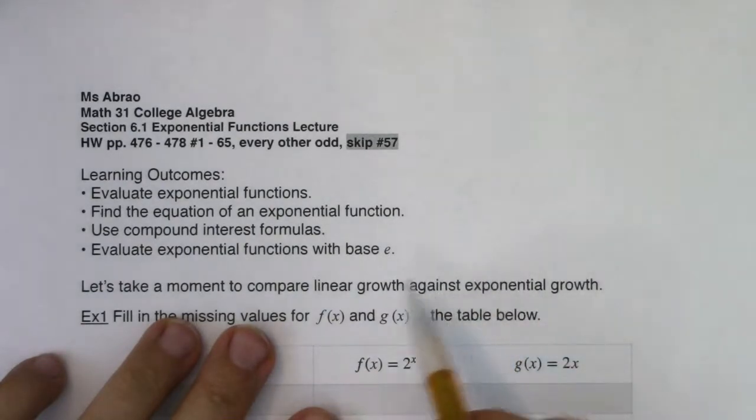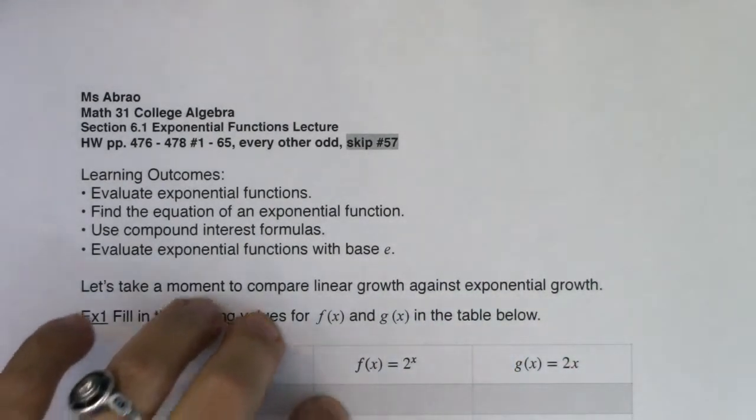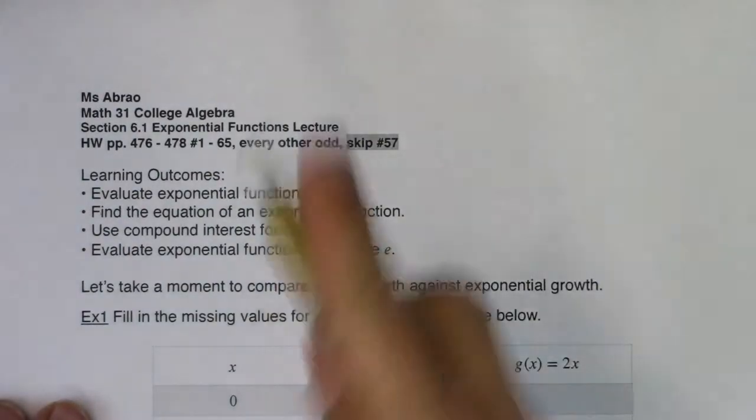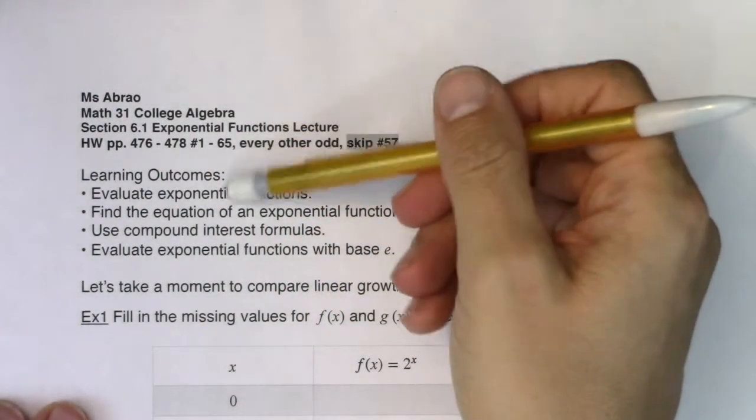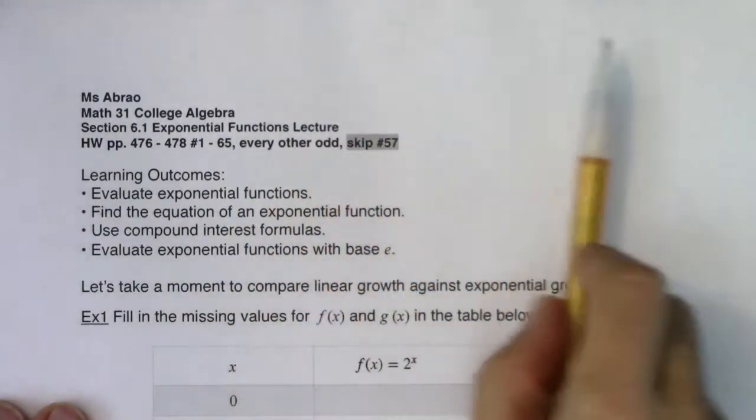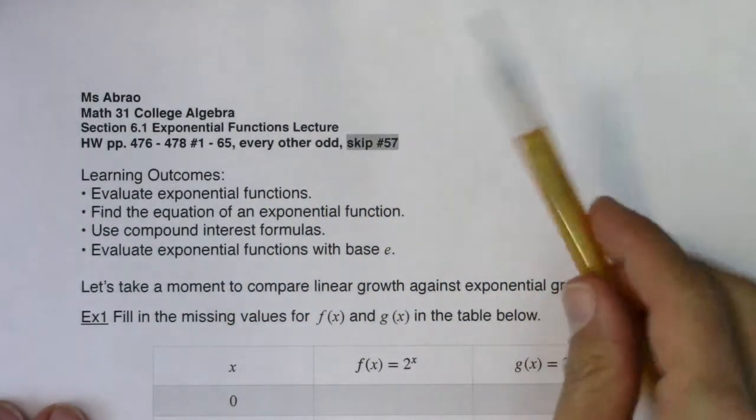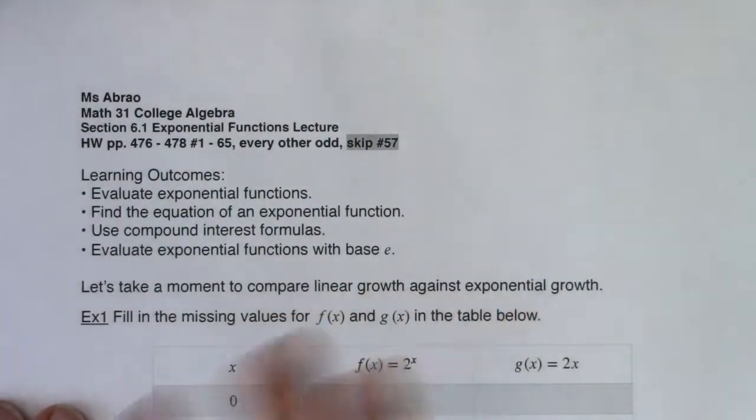And I always joke about this, where if you have a job and you have a salary schedule, like I do as a teacher, they put us on this big salary schedule. It's got rows and columns in it. And you move down the rows based on years of experience and you move over in the columns based on your education level. And I always joke that if you have a job where you have some kind of salary schedule, you should ask for an exponential growth salary schedule as opposed to linear growth.